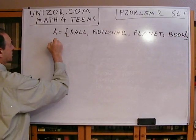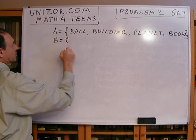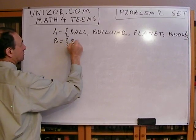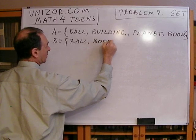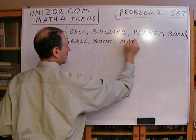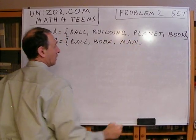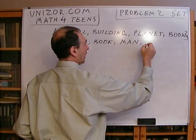And set B, which contains, let's say, wall, book, man, and pen.